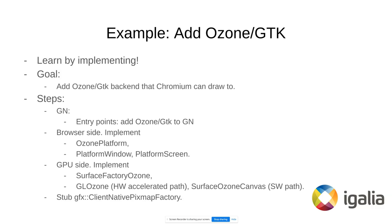We also need the native pixmap factory. This is basically needed to create native pixmaps — for example, in Wayland we use libgbm to create these pixmaps.